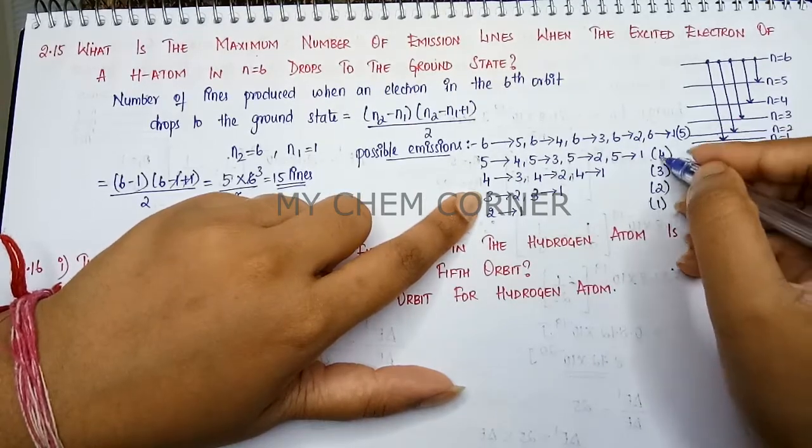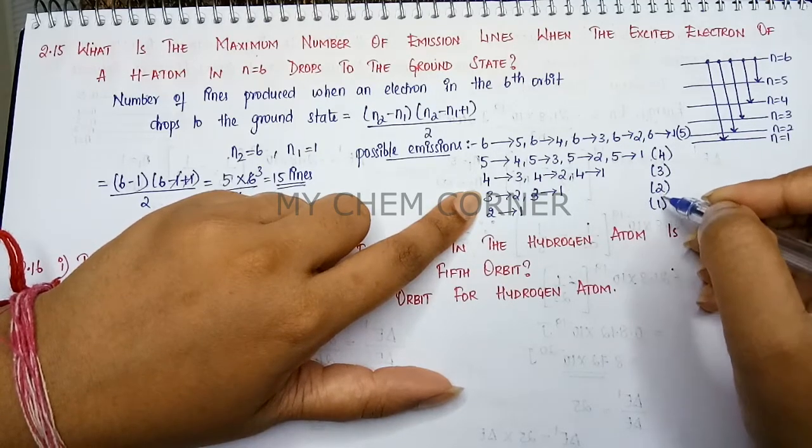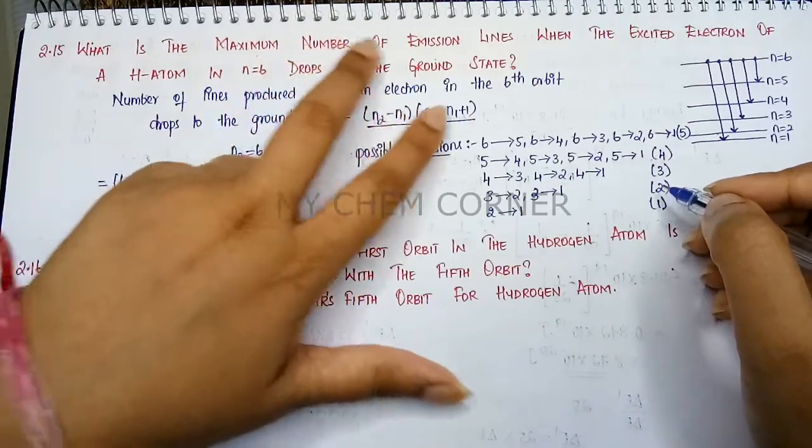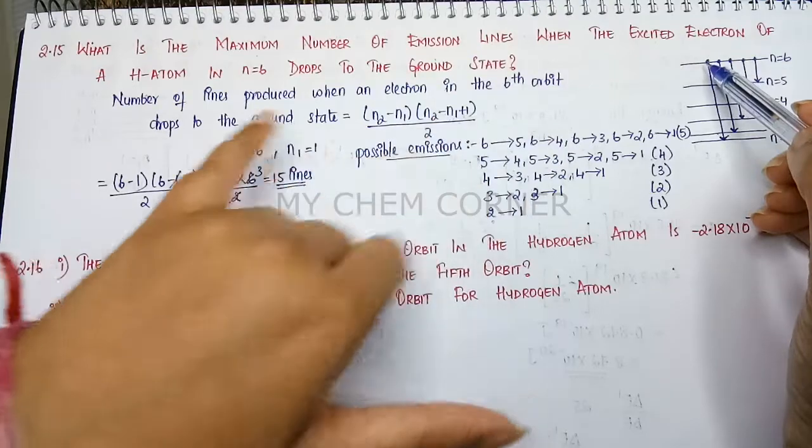So when I add up all this: 5 plus 4 is 9, plus 3 is 12, plus 2 is 14, plus 1 is 15. Therefore we have 15 lines, which are the maximum number of emission lines that are seen when the electron is in the sixth state and wants to be dropped to ground state.